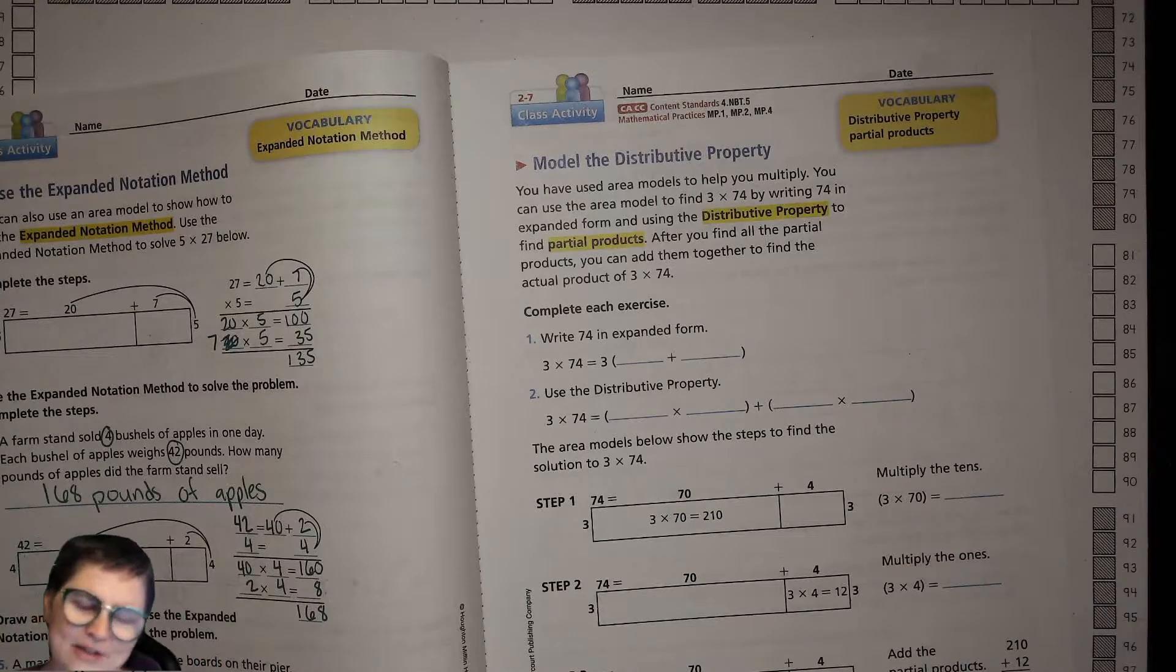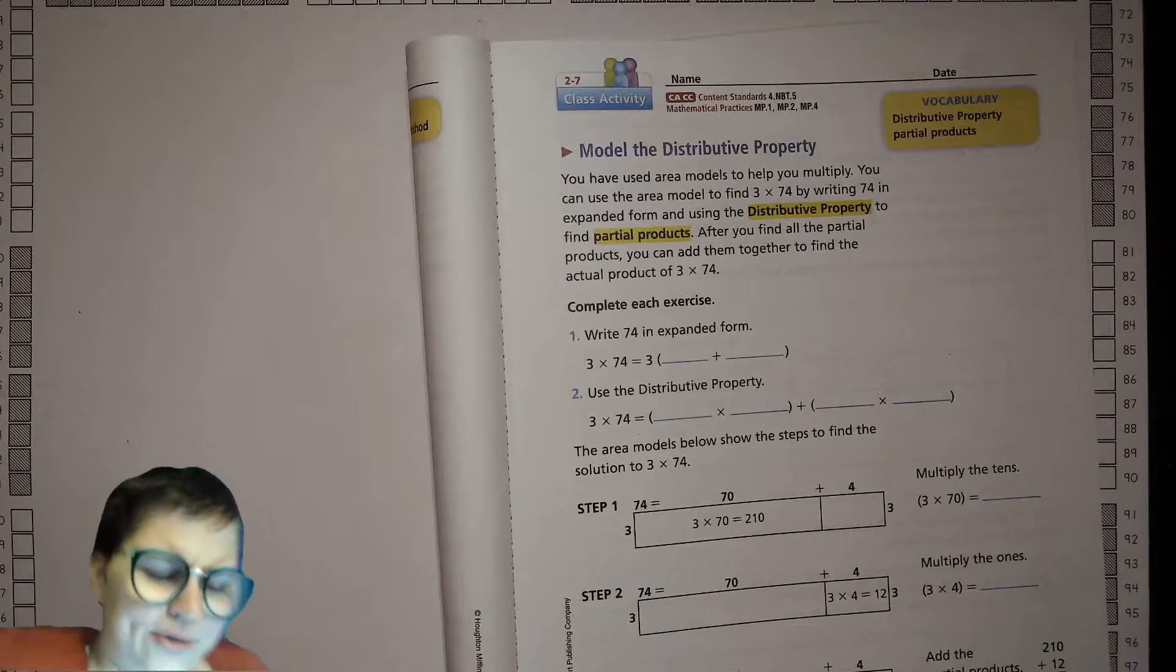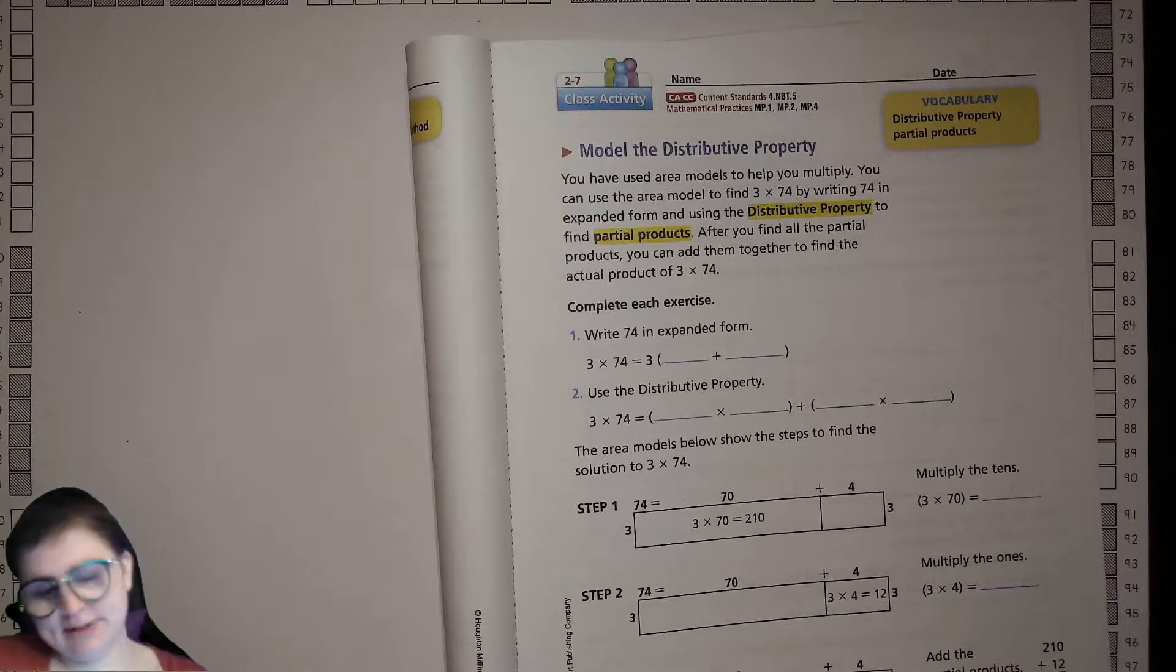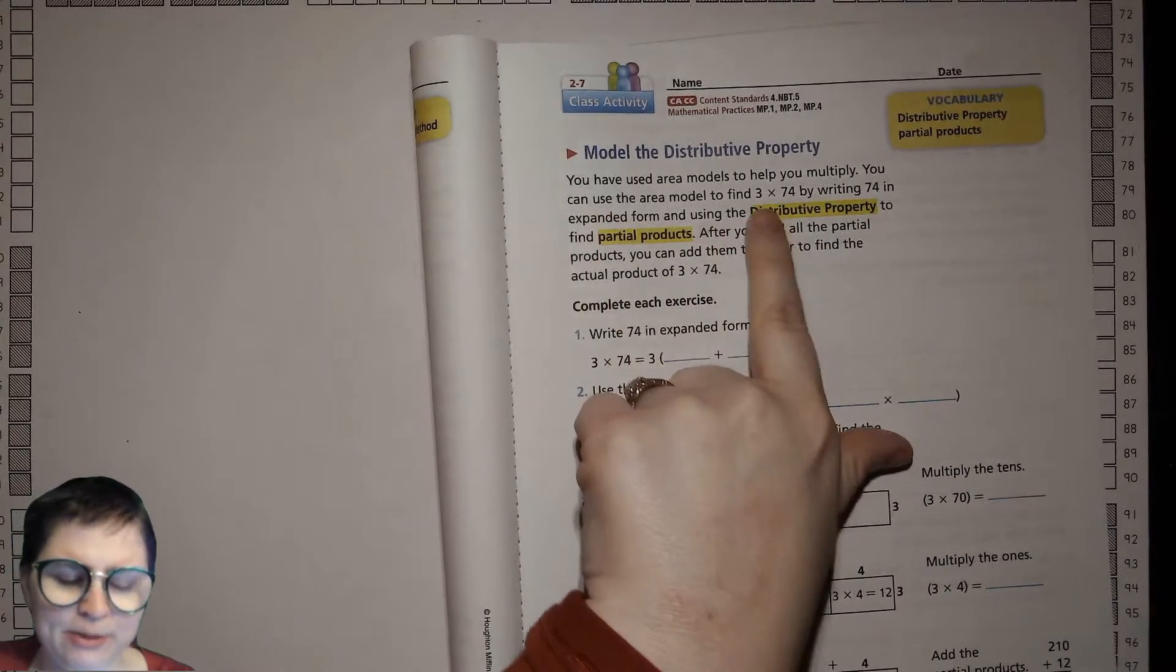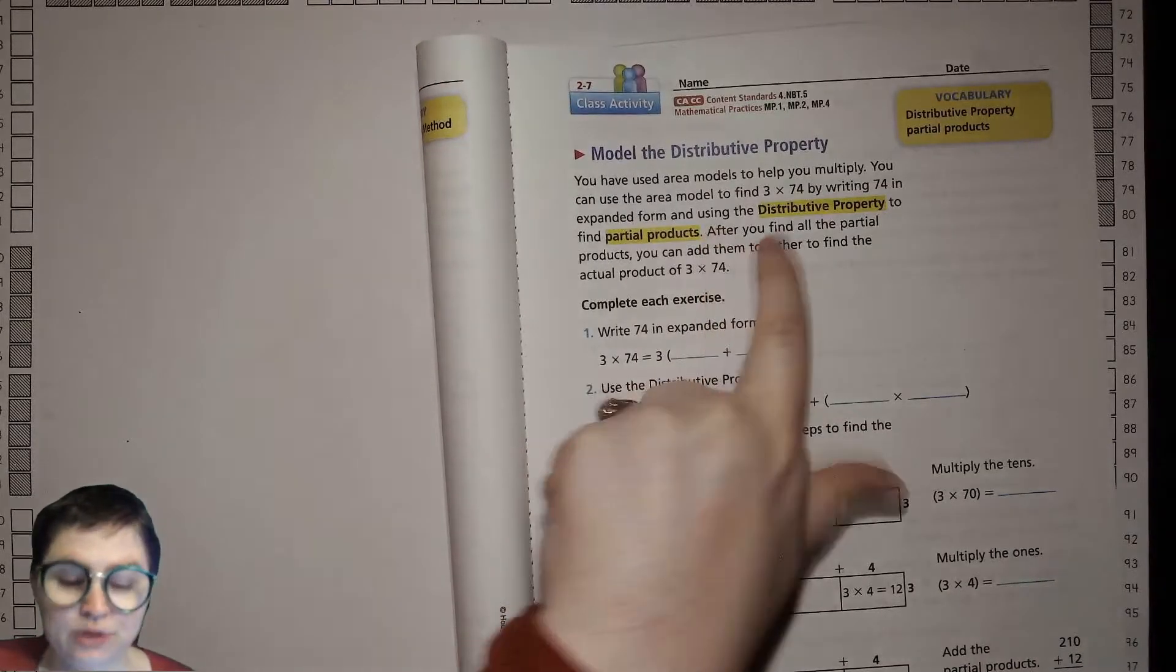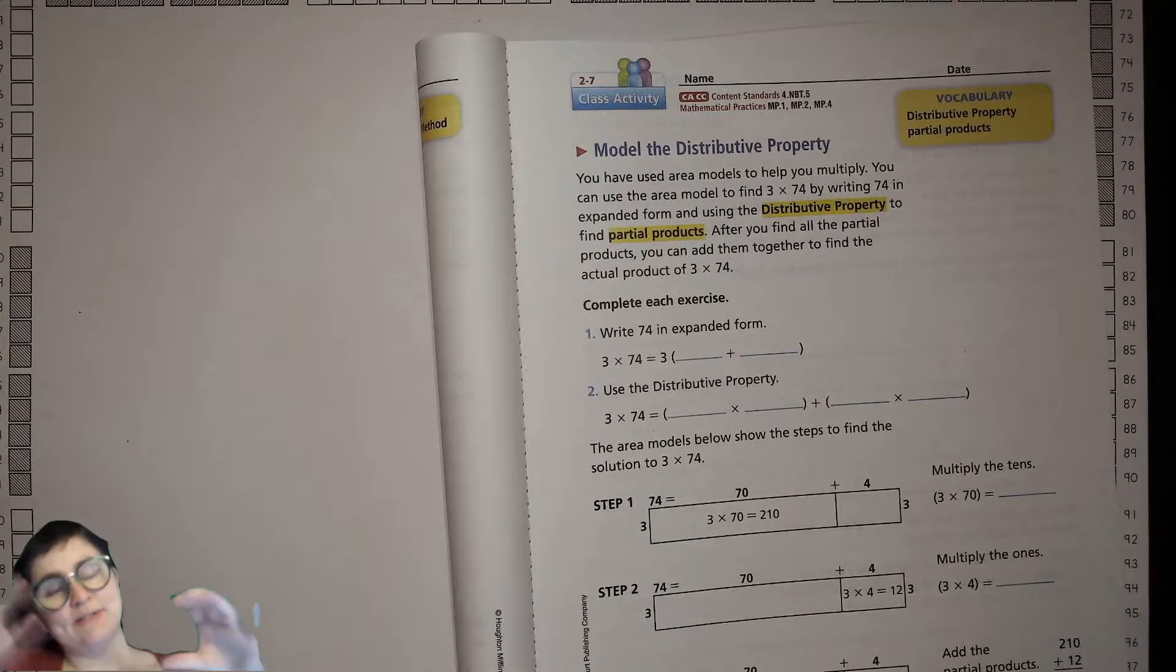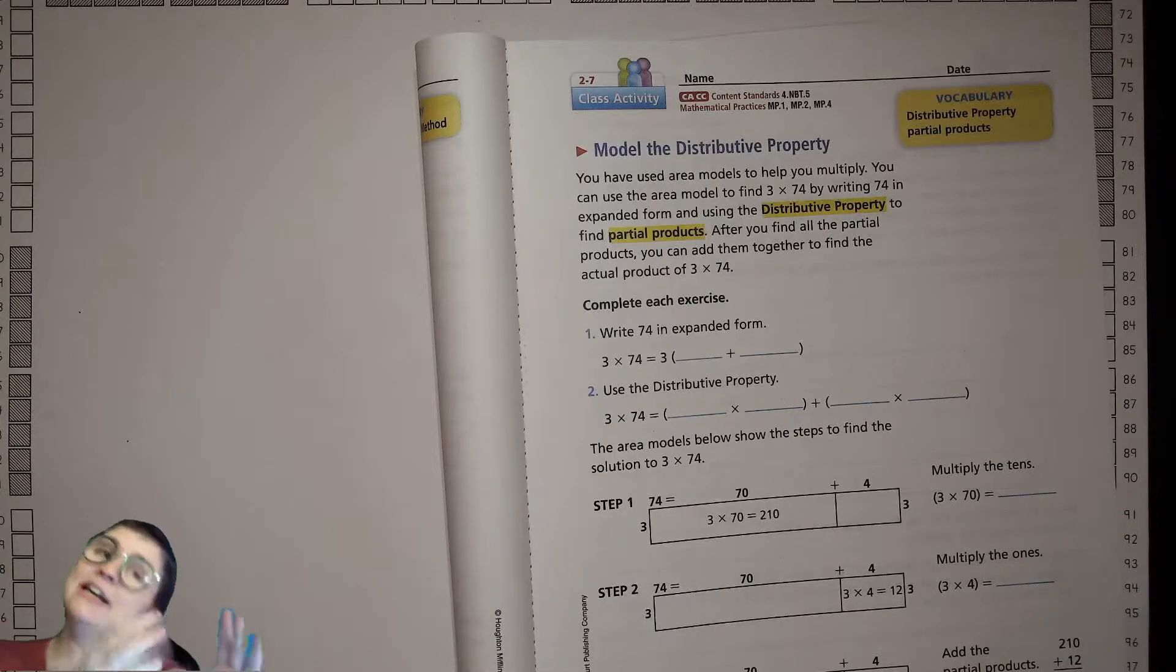Model the distributive property. You have used area models to help you multiply. You can use the area model to find 3 times 74 by writing 74 in expanded form and using the distributive property to find partial products.